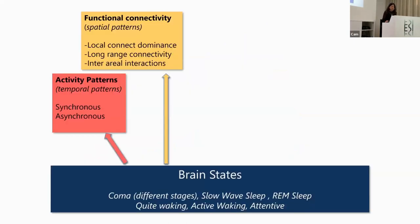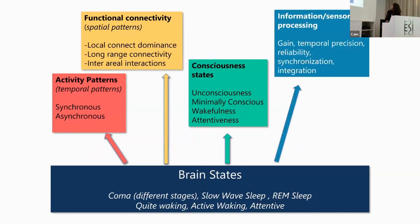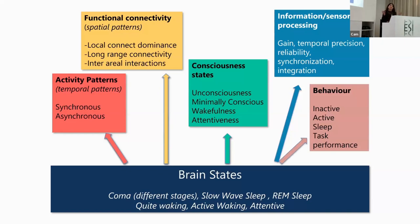These different brain states show different activity patterns that we can record as different degrees of synchrony. We've heard about different emergent patterns today, such as functional connectivity in spatial maps, local and long-range connectivity, consciousness states — unconsciousness, wakefulness, attentiveness, minimally conscious. If you study information processing, you find they are associated to different gain, temporal precision, reliability, and different behaviors. These brain states can be physiological — we all go through different brain states during sleep and wake every day — but they can also be pathological, with clinical relevance, and they can be drug-induced.